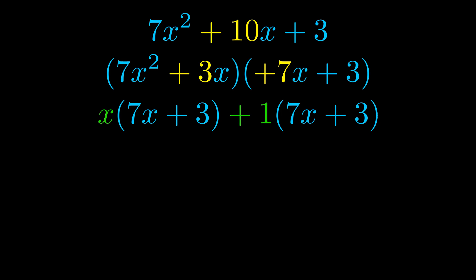Notice also how what remains inside of the parentheses is the same in both cases. The blue values are the same. Those blue values will become one of our factors and we will combine the two green values, the GCFs that we pulled out, to get the other one. And that is our fully factored equation.